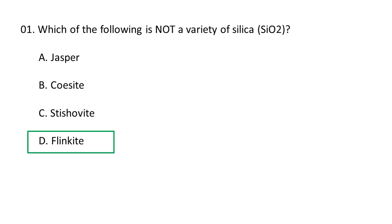Whereas Flinkite is a manganese mineral. It has a composition of Mn3(AsO4)(OH)4, consisting of a greenish-brown basic manganese arsenate in feathery forms, and it has a specific gravity of 3.87. So D. Flinkite is the correct option.